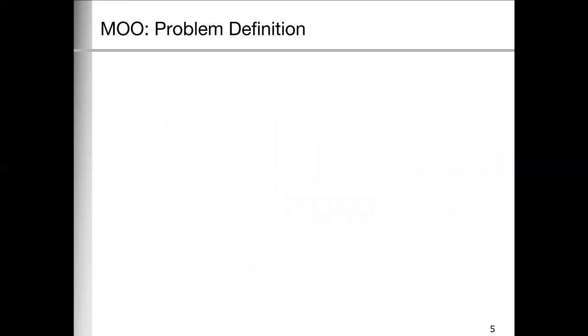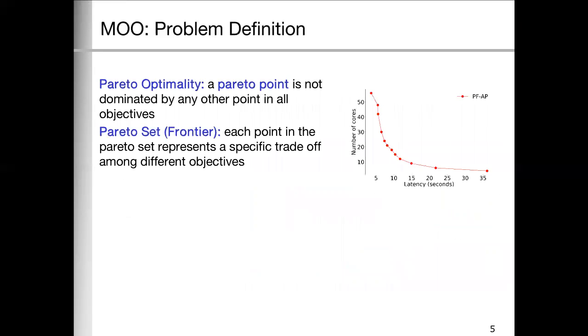Now we define the MO problem. First, Pareto optimality means a Pareto point is not dominated by any other point in all objectives. Then, the result of solving a MO problem is a Pareto set. Each point in Pareto set represents a specific trade-off among different objectives.